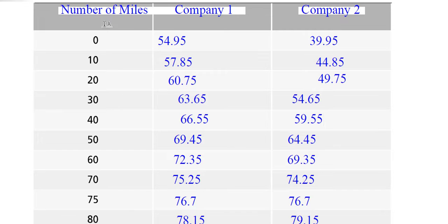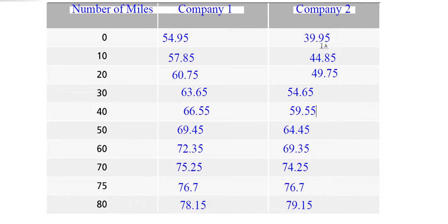And you'll notice for the number of miles, anything below 70, it looks like company 2 is cheaper. If I go 0 miles, company 1 is 54 versus 39. If I travel 40 miles, company 1 is $66 versus 59. But then if you look at 75 miles, company 1 or company 2 costs the same amount. And then when I get to 80 miles, all of a sudden, company 2 is more expensive. So it looks like if my trip was less than 75 miles, I would probably take company 2, or I'd rent from company 2 because it's cheaper. And then anything over 75 miles, it looks like company 1 becomes cheaper.